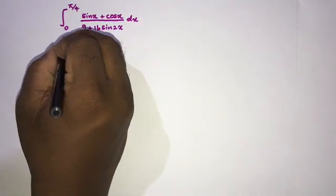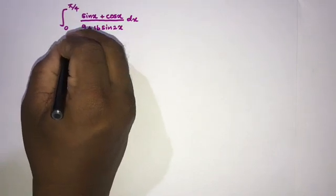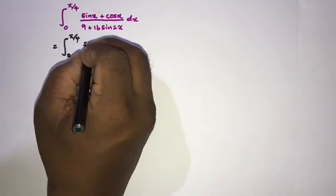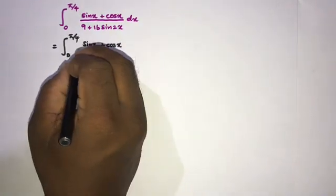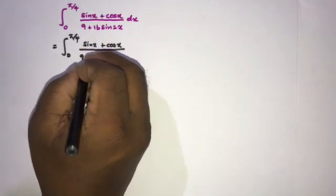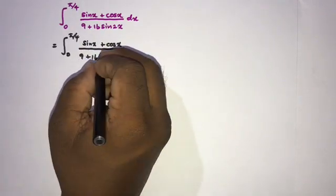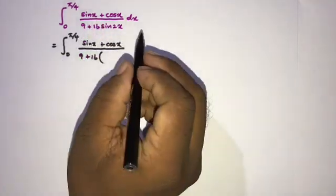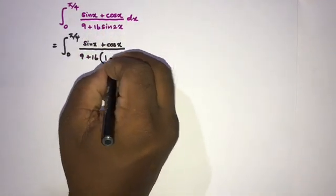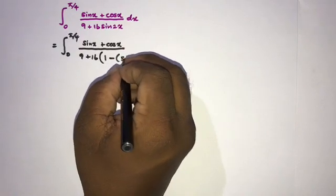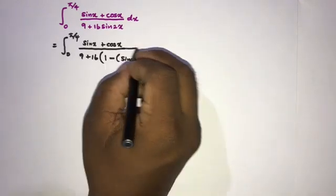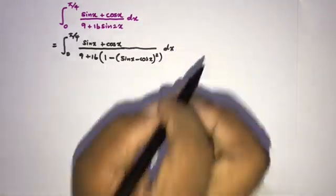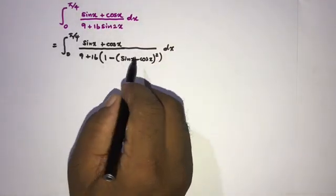We have the integral from 0 to π/4, with sin x + cos x in the numerator, over 9 + 16·sin 2x. Now, instead of sin 2x I am going to use 1 minus (sin x − cos x)² dx.